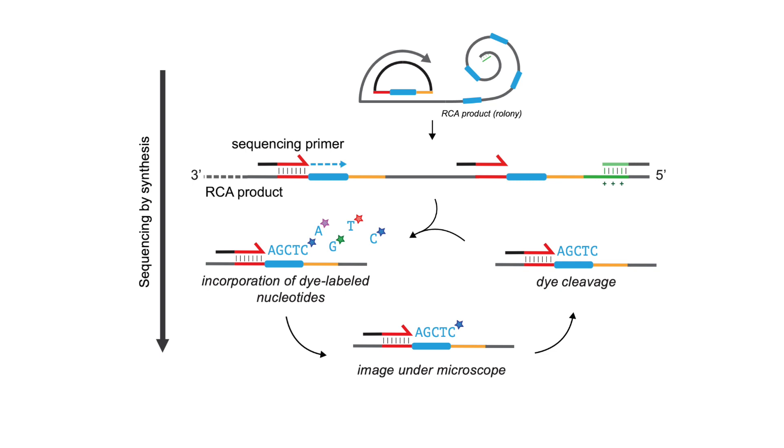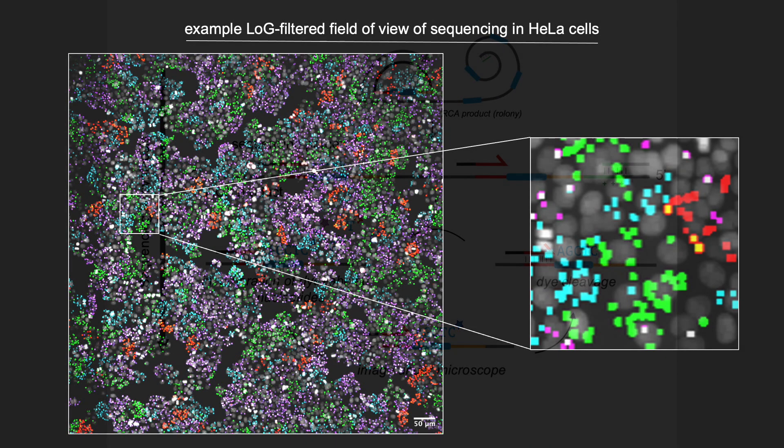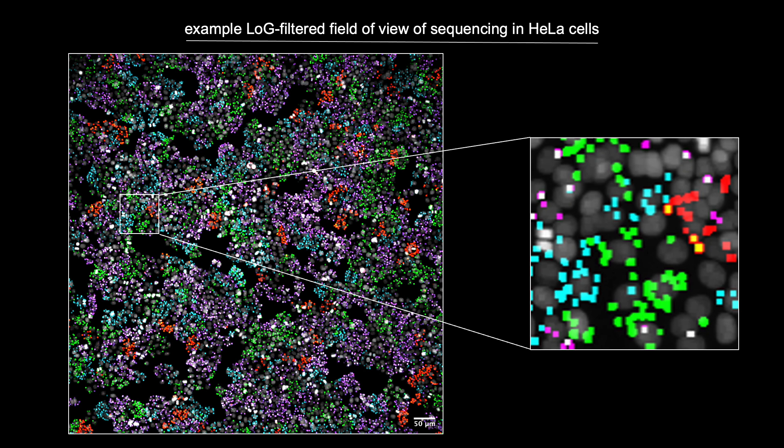One of the key advantages of RCA is the signal amplification that facilitates low magnification readout of perturbation identities. In our first screen, we were able to image around 3000 HeLa cells in a single field of view at 10x magnification, and easily acquired 9 cycles of sequencing from millions of cells in a few days.